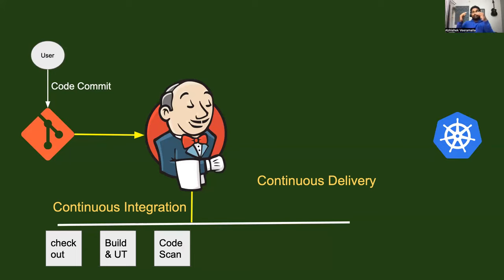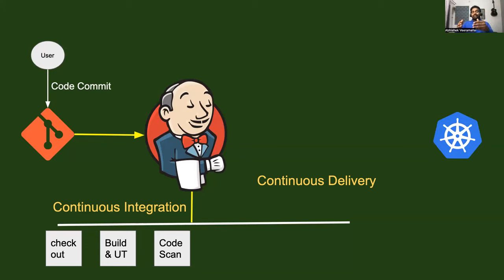Once the build, unit testing, and static code analysis are done, you move towards the code scanning stage. As part of code scanning, you can use tools like SonarQube, or any self-hosted Sonar solutions, or any code scanning solutions. You will tell the interviewer that we scan the code for any security-related vulnerabilities or for static code analysis. You can also say that we perform security checks to ensure our code is free from any vulnerabilities, and in this stage you will talk about SonarQube.